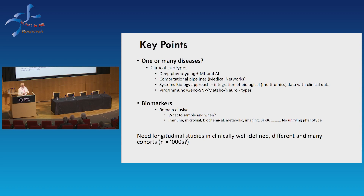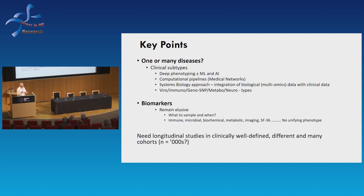Other key points: one or many diseases — clinical subtypes. We're taking advantage of sophisticated technology, allowing us to stratify patients more accurately based on deep phenotyping. The Canadian group in particular is looking at lots of different parameters to classify disease subtypes. We're using more and more computational approaches to help integrate and understand large data sets — medical networks that allow us to look at a whole variety of things. Systems biology has been applied to other diseases like inflammatory bowel disease, and using combinations of data, we can identify patients best able to respond to different types of therapies.